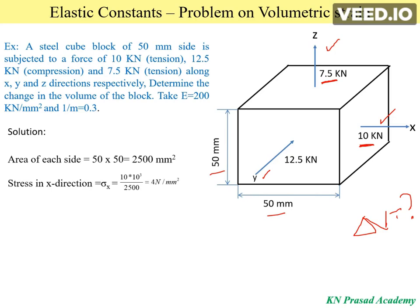Next, we determine the stress in the x direction, that is σx. σx equals the applied load of 10 kN — that is 10 × 10³ newtons — divided by the cross-sectional area of 2500 mm², giving a value of 4 N/mm². The nature of the stress is tensile, so we consider σx as positive 4 N/mm².